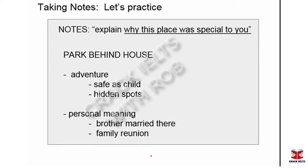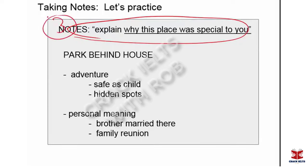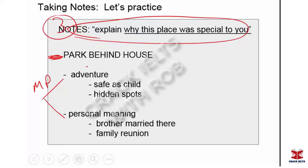Let's look at an example. Here's my topic card, and remember this was Part Three — the last sub-point. The question was: 'Describe a place that was special to you.' In my speech, I'm going to talk about a park that was behind my house when I grew up. I have two main points about my park: first, it was a place for adventure; and second, it was a place that had personal meaning for me.